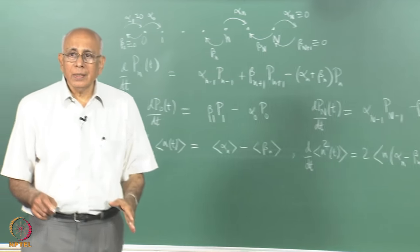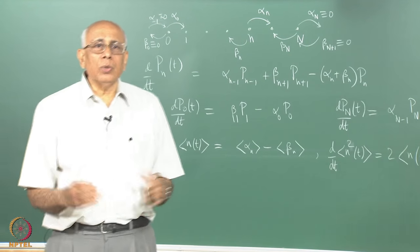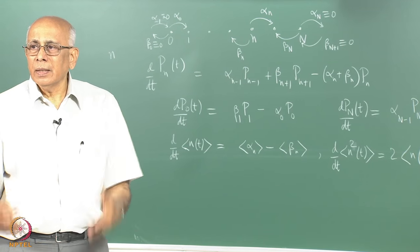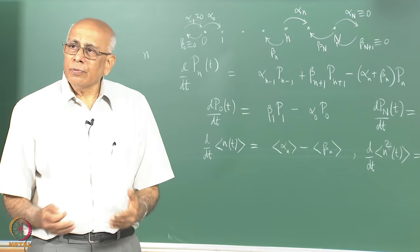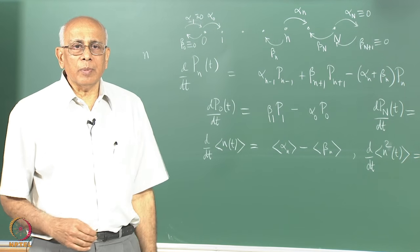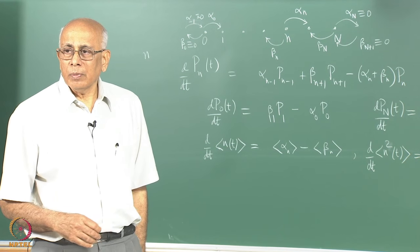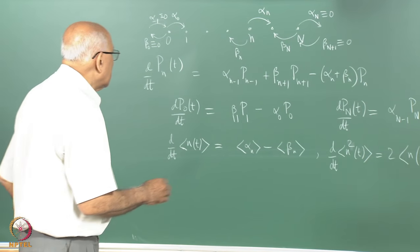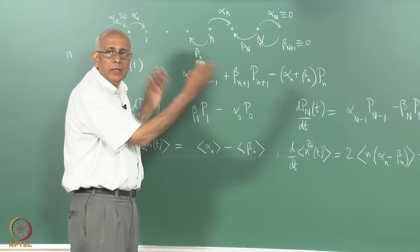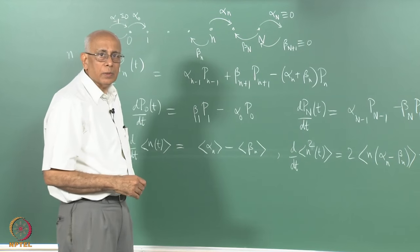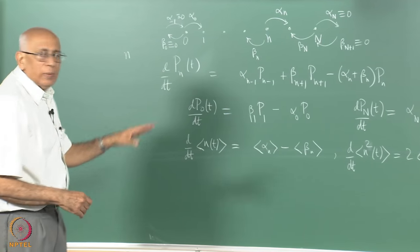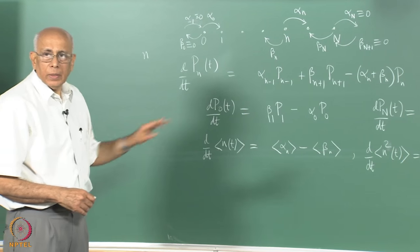If the alphas and betas are constants, the solution follows the lines of what we had earlier — the biased random walk problem — with variations depending on whether you have a finite or infinite range. If they are linear in n, it is not very hard to actually solve the equations explicitly.